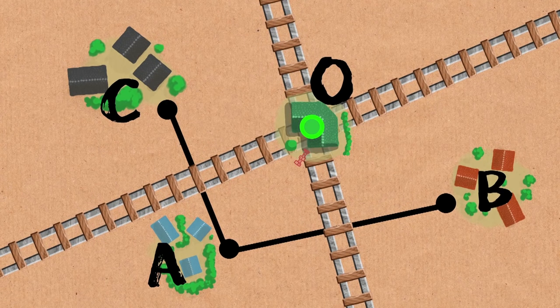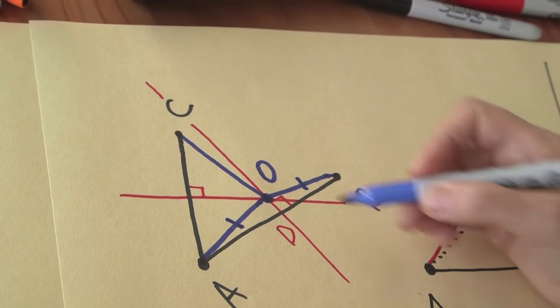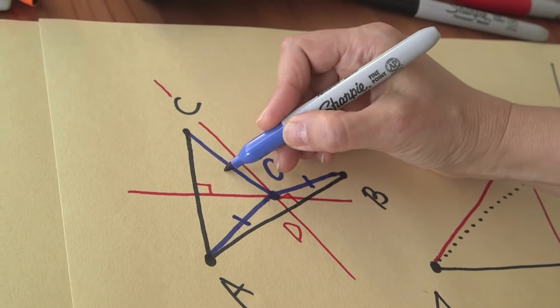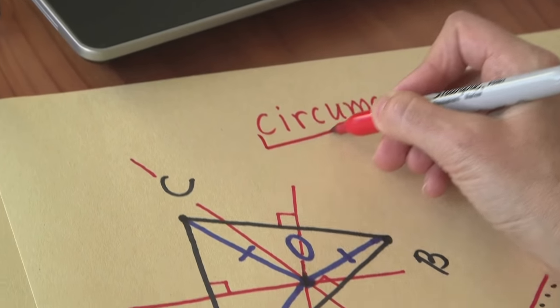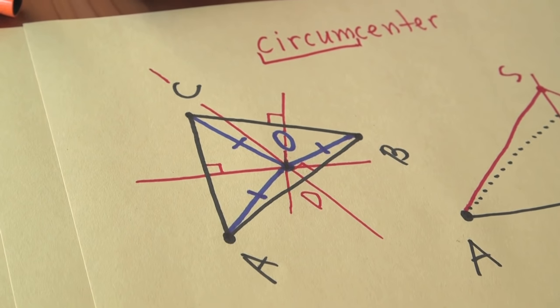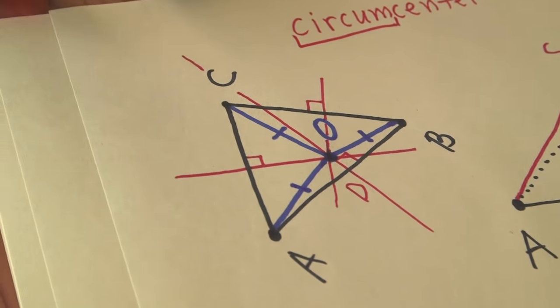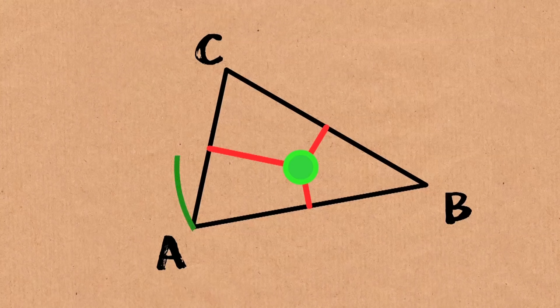So if we call this O, OB is equal to OA and OA is equal to OC. This is different to the medi-center. It is a very different one and it has a name. It's called the circumcenter because they are referring to a circle whose center is O and that circle passes through the three vertices.